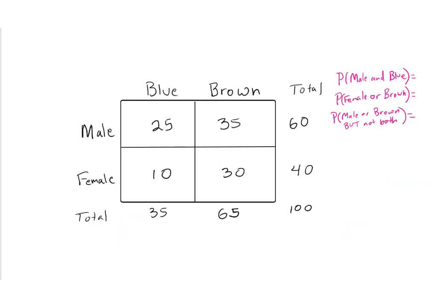In the following example, there are male or female subjects who have blue or brown eyes, with data filling out our table. For the probability of male AND blue — a blue-eyed male — that would be the intersection of blue and male, which is 25, over the total 100 people in the study. So it's 25 over 100, or one quarter.